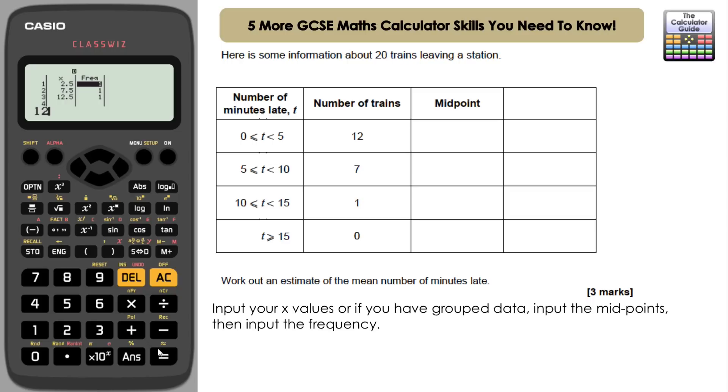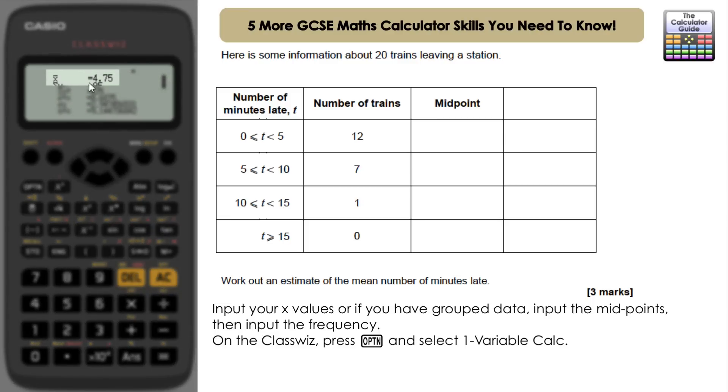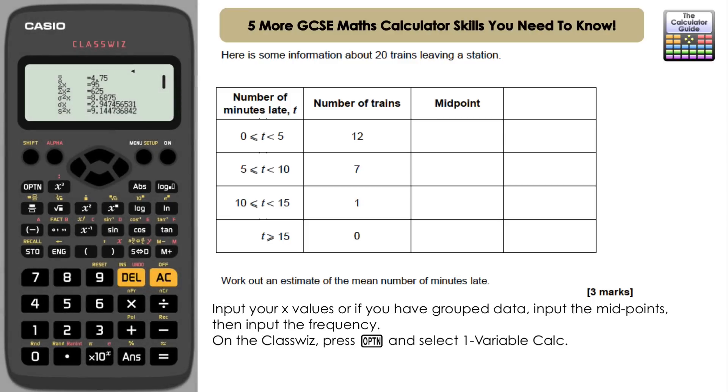Okay, I'm going to show you two different ways that you can get the mean. If you have a ClassWiz model, the easiest way is to press option and then 3 for one variable calc, and you can see the mean is right here at the top. Our estimate of the mean is going to be 4.75.